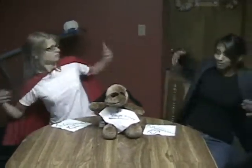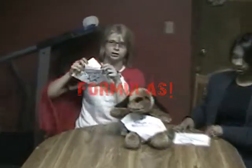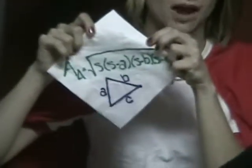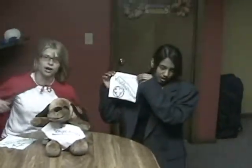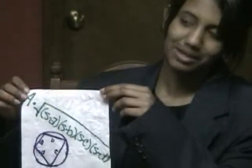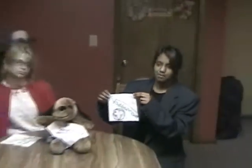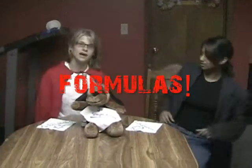It's Heron! The area of a triangle equals square root of semi-perimeter times semi-perimeter minus A, semi-perimeter minus B, and semi-perimeter minus C. The area of a cyclic polygon equals square root of semi-perimeter minus A, semi-perimeter minus B, semi-perimeter minus C, and semi-perimeter minus D. Formulas! That is the end.